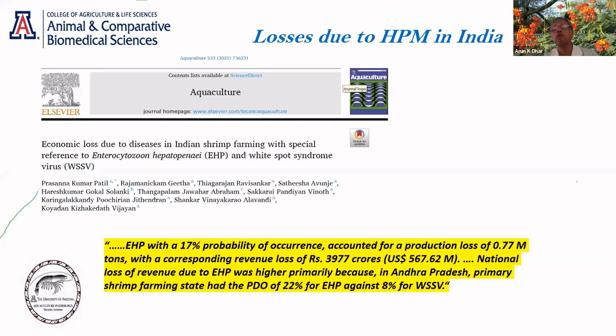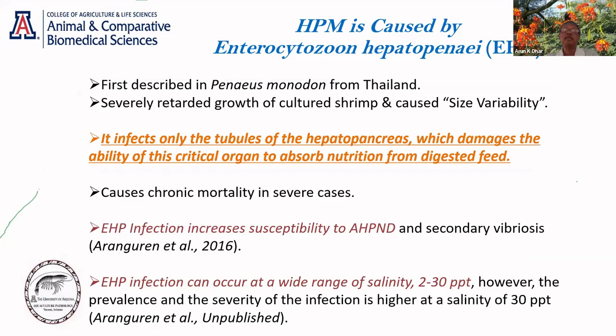One other thing in that abstract that caught my attention is that the national loss of revenue from EHP was higher primarily because Andhra Pradesh, which is a primary shrimp-producing state, had EHP prevalence of 22% against 8%. The bottom line is that as EHP spreads and causes a chronic disease more than an acute disease, the extent of losses are becoming significant. With that being said, just a few important points with respect to EHP and the disease it causes, which is called hepatopancreatic microsporidiosis or HPM.